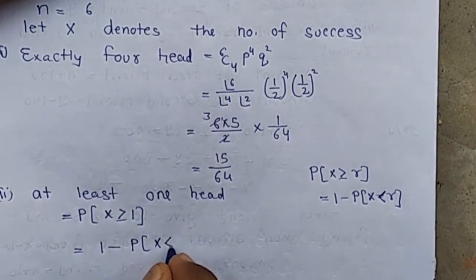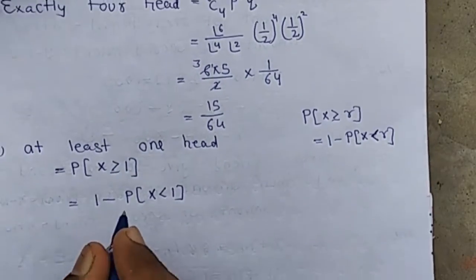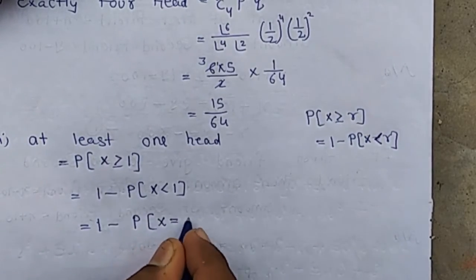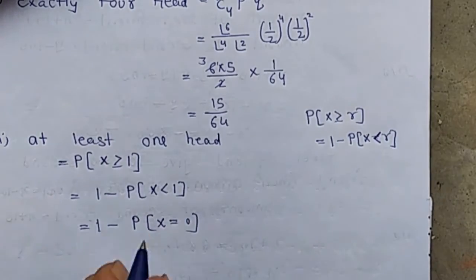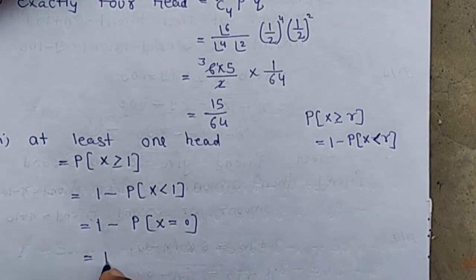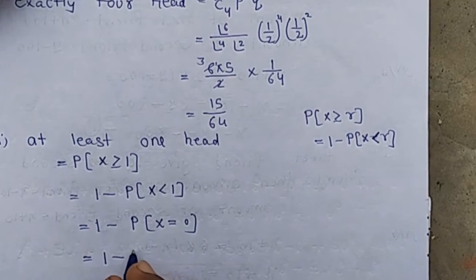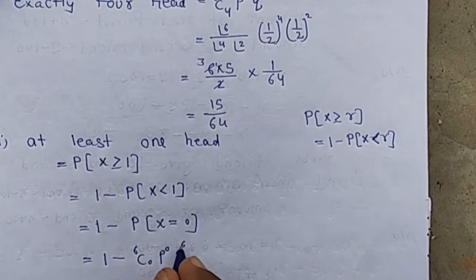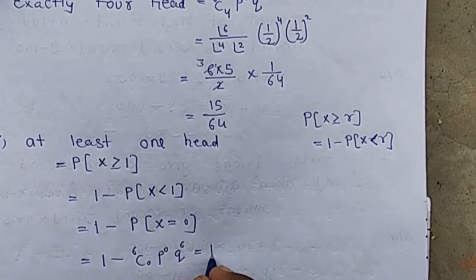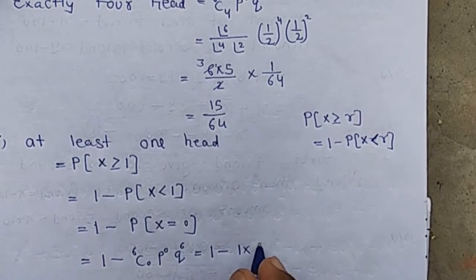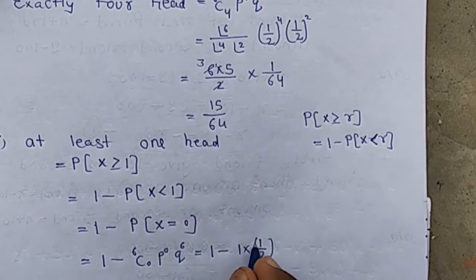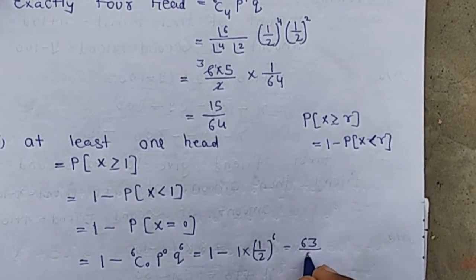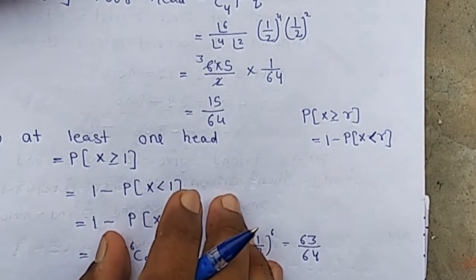Since X < 1 means X = 0, the only possibility is P(X=0) = 6C0 × P^0 × Q^6 = 1 × (1/2)^6 = 1/64. Therefore P(X ≥ 1) = 1 − 1/64 = 63/64.